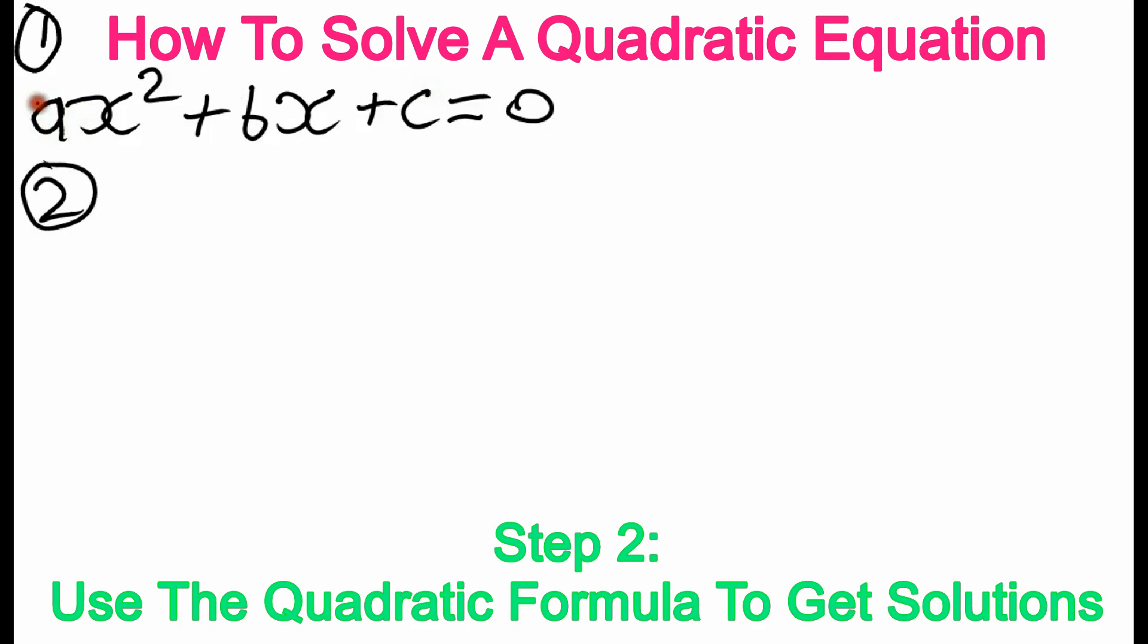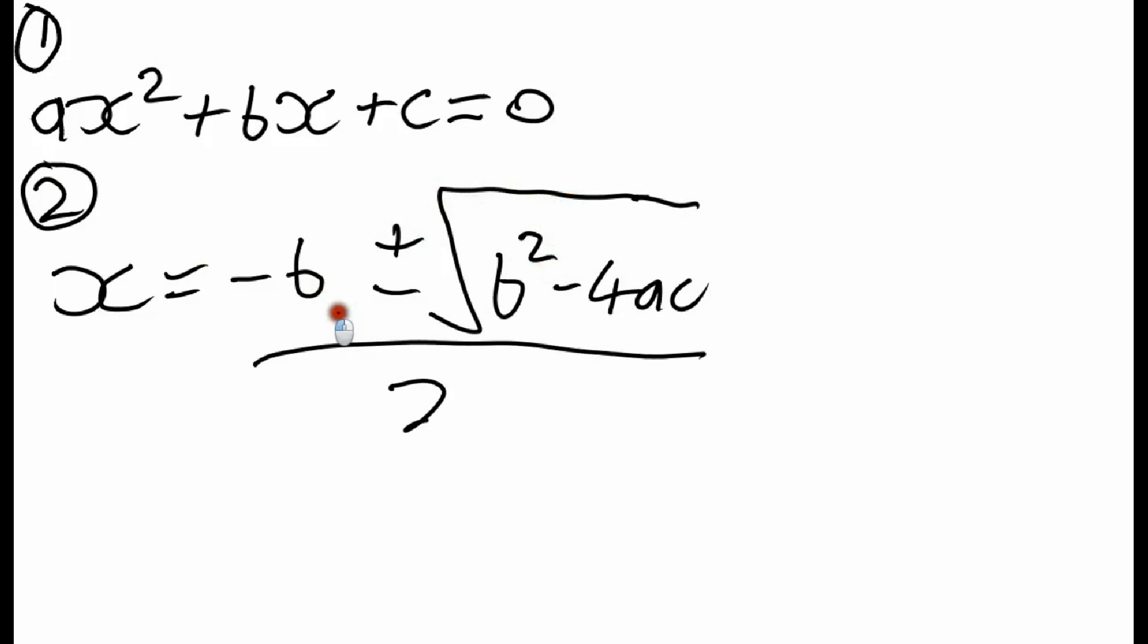Step 2, you find the solution. The solution is x is equal to minus B plus or minus the square root of B squared minus 4AC all divided by 2A.